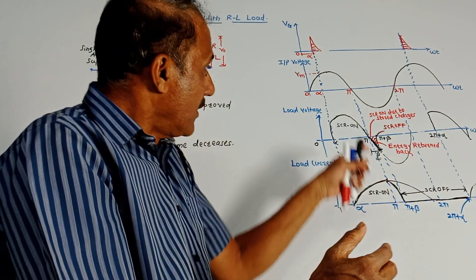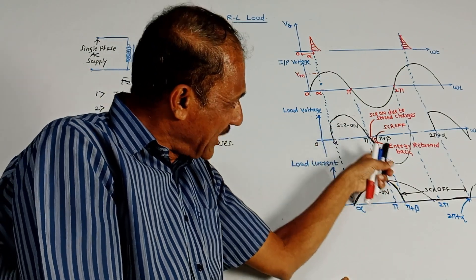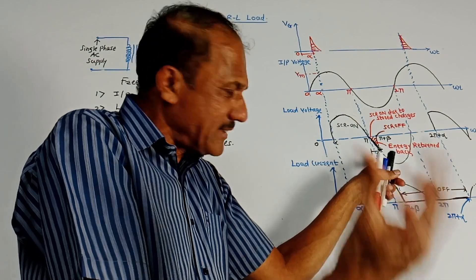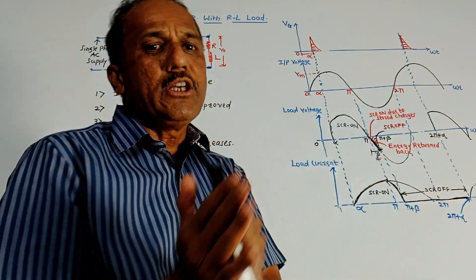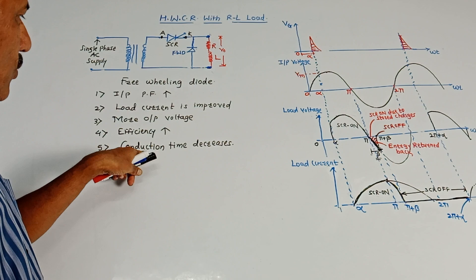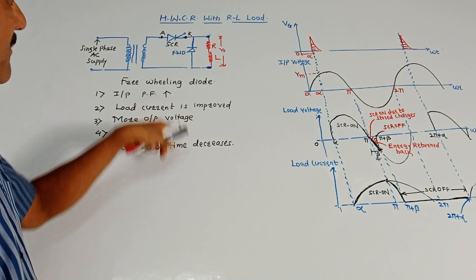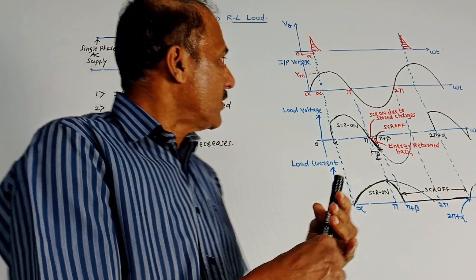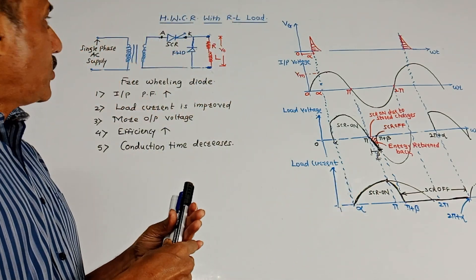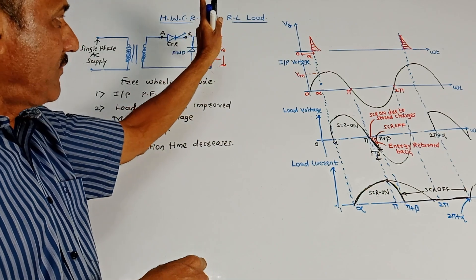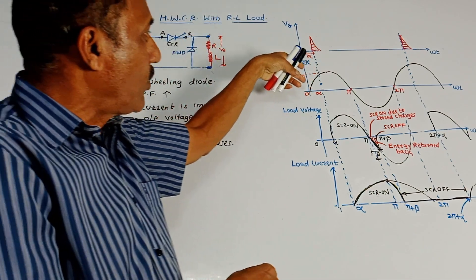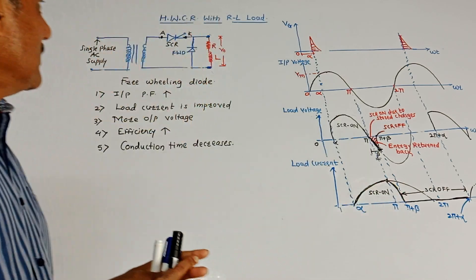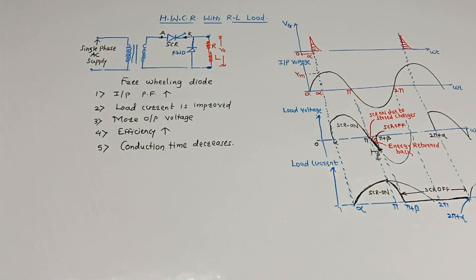During the negative half cycle, SCR starts conducting but after a certain time it should be switched off. To reduce the conduction time, the FWD — freewheeling diode — is used. That's it for today's session. We have discussed the half wave controlled rectifier. It is called half-wave because conduction is only during the positive half cycle. Thank you, thanks a lot for watching this video.